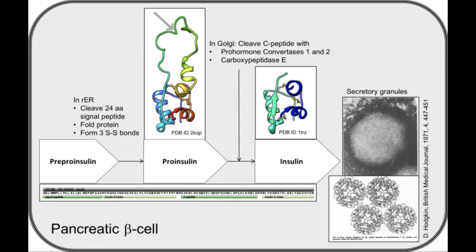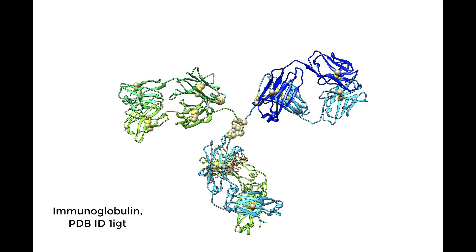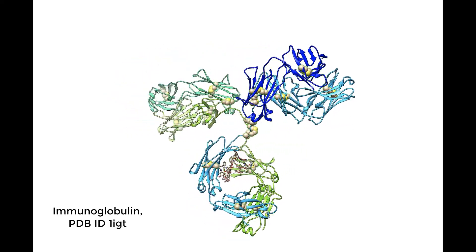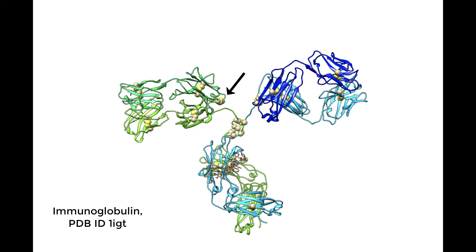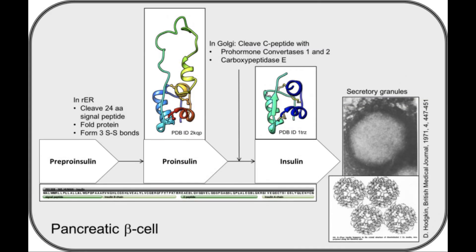Specific pairs of cysteines are lined up close together, and in the oxidizing environment of the ER lumen, form the disulfide bonds. Many other secreted proteins, such as immunoglobulins, also have disulfide bonds to stabilize their structure. As the newly synthesized insulin polypeptide matures, a series of post-translational processes in the Golgi cleave off the central loopy region.